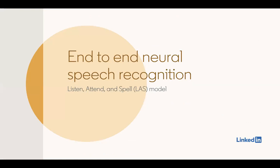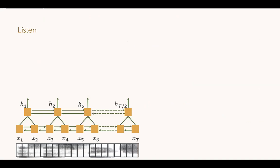Now we will talk about end-to-end neural speech recognition — specifically a model called Listen, Attend, and Spell, or the LAS model. In the Listen component, we take as input the speech spectral feature sequence and input it to a bidirectional LSTM model — arrows going in both directions indicate the bidirectional LSTM. It is also a pyramidal model in the sense that as we apply more layers to this LSTM, we reduce the time resolution. The hidden representations of these LSTM states compose the representation of the listen layer.